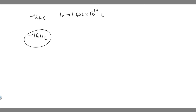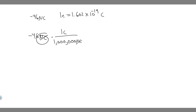First we just convert from microcoulombs to coulombs. We know that there are 1 million microcoulombs for every one coulomb, so that cancels out the microcoulombs and now it's in coulombs. Then we just have to convert from coulombs into electrons — that's 1.602 times 10 to the minus 19 coulombs per electron. Keep in mind that this is negative, meaning the electron value also has to be negative, so the negative signs cancel and we get a positive number of electrons.